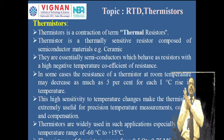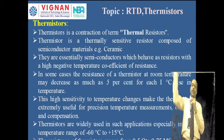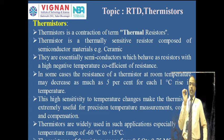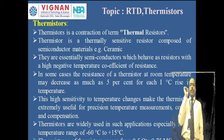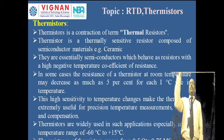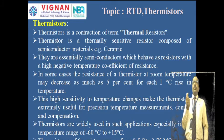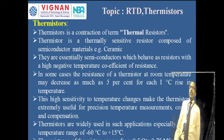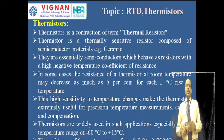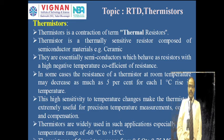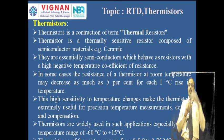Thermistors have high sensitivity compared to RTDs and thermocouples. This high sensitivity makes thermistors extremely useful for precision temperature measurement, temperature control, and compensation. Very small temperature changes of 0.1 or 0.01 degrees centigrade can be measured using thermistors. In most applications, thermistors are used in the temperature range of minus 60°C to 15°C, and their resistance ranges from 0.5 ohms to 0.75 megaohms.